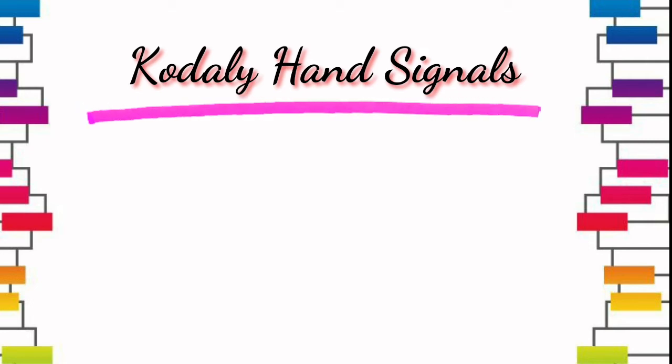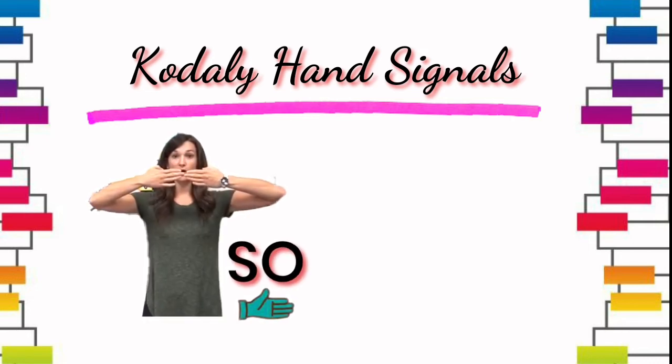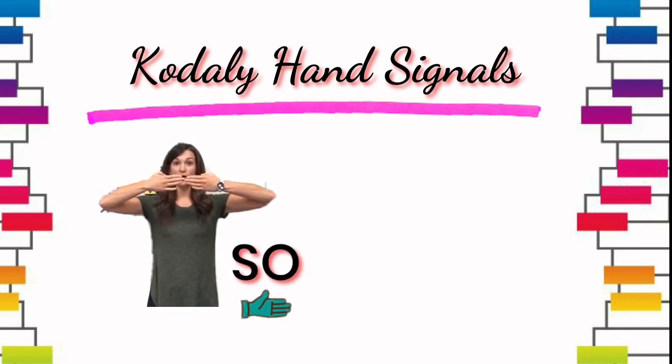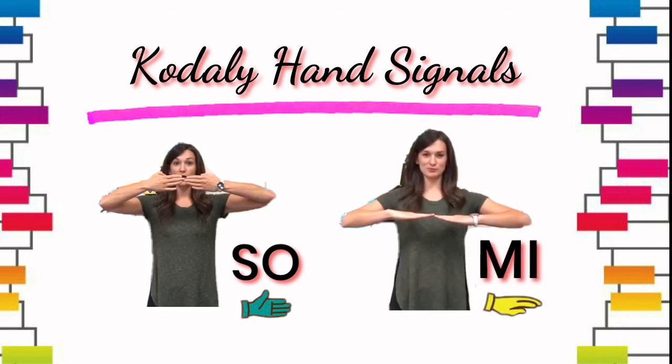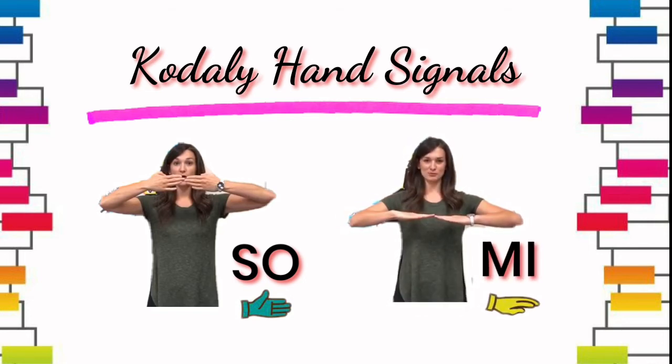This is how you do the hand signal for sol. You need to place your hand with your palm facing your mouth. And this is how you do the hand signal for mi. You need to place your hand on your chest, palm facing down.